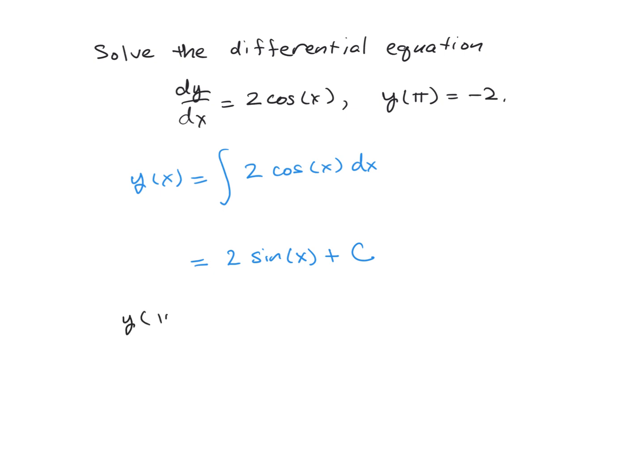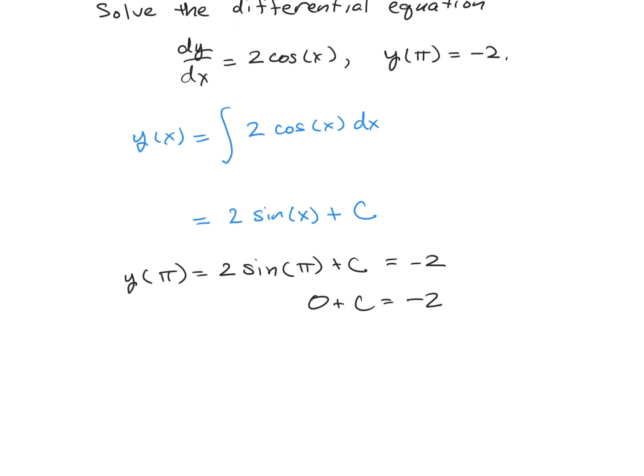So y of pi is 2 times the sine of pi plus c. And that must equal negative 2. Well, the sine of pi is just 0. So this first term drops out and we get c is equal to negative 2. And that is our arbitrary constant.